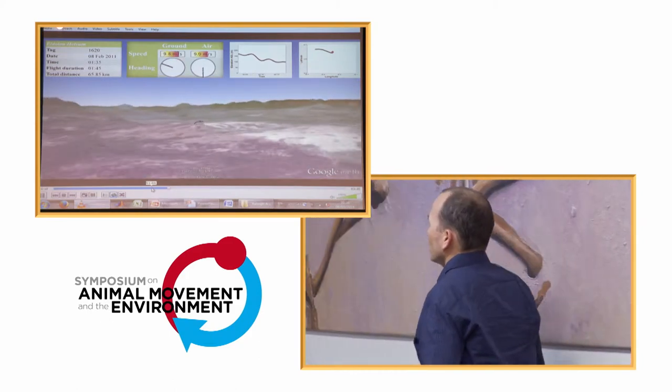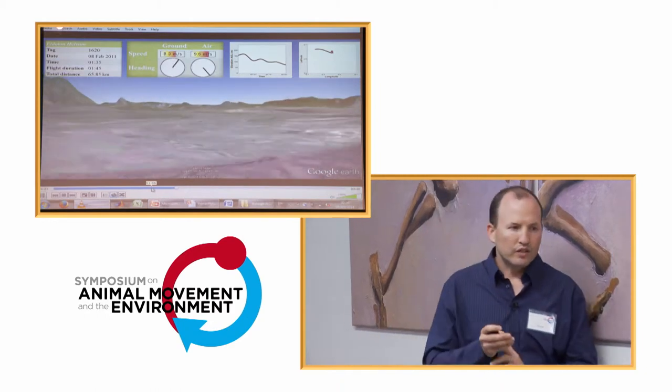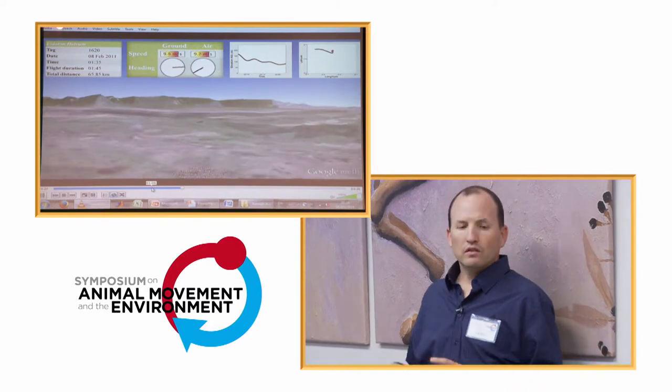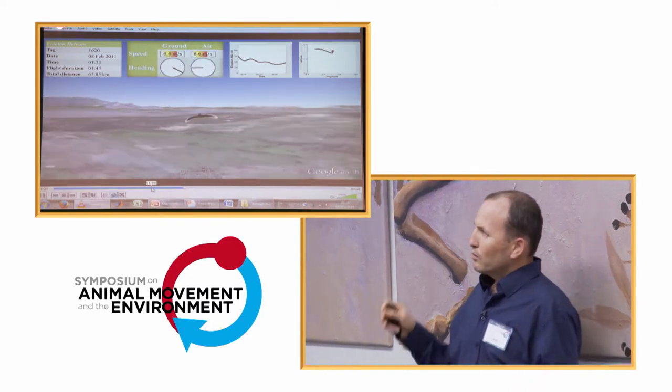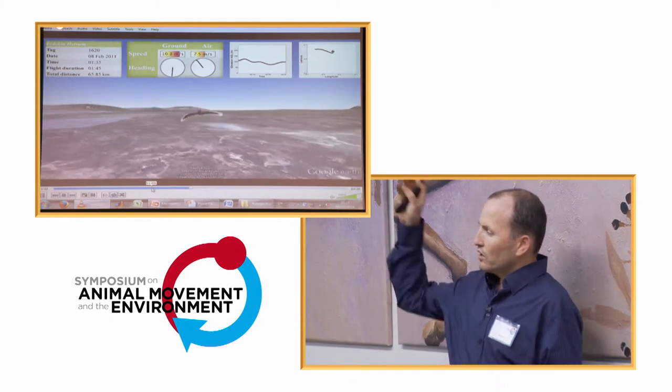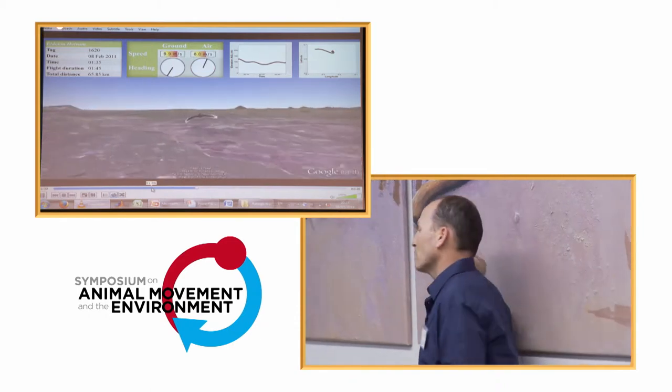But most of the tracks are pretty much straight going from the roost to feeding sites. And these feeding sites are fairly constant, so they are specific. The bat is going from one place, from the roost area to the feeding site, and then returns to the same feeding site night after night.